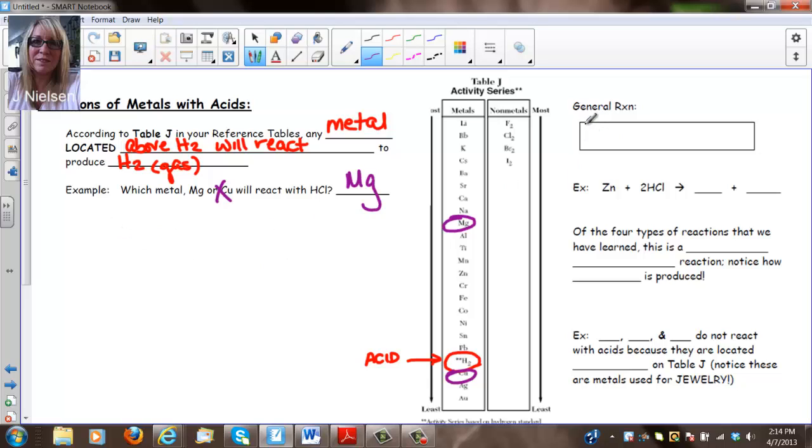So a general reaction is a metal above the acid plus acid yields hydrogen gas and some salt, depending on the metal that's involved. So in this case we have Zn plus HCl. Zn is above HCl, so the reaction will take place. So remember this is a single replacement reaction, so Zn is positive, so it's going to push out the positive. So this is ZnCl, and we have to look at our charges. Zn has a plus two charge, Cl has a minus one charge, so this is going to be ZnCl2 after we drop and cross, and hydrogen gas.